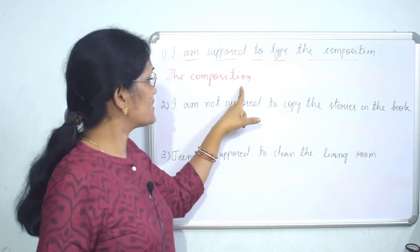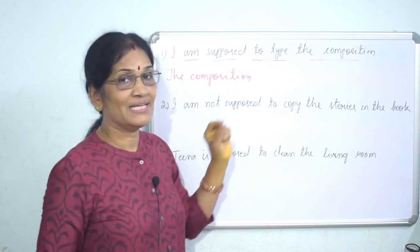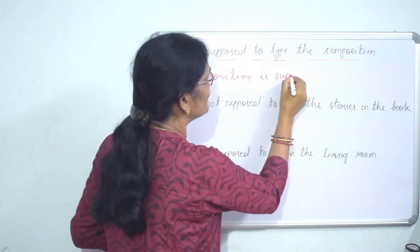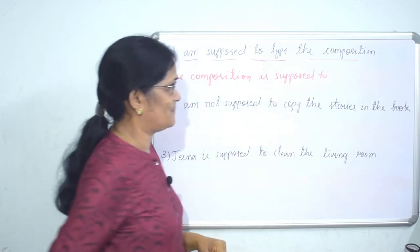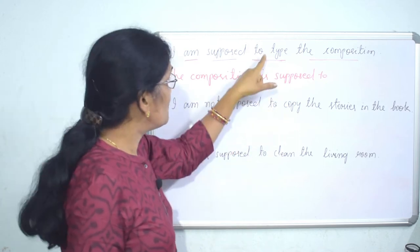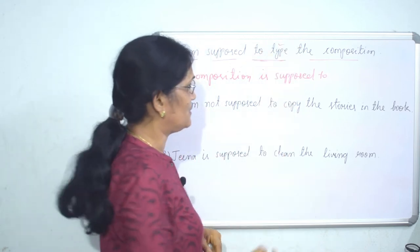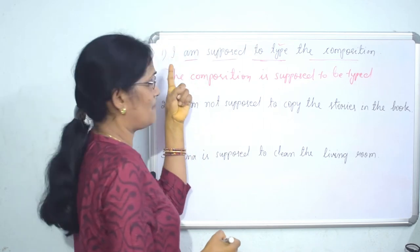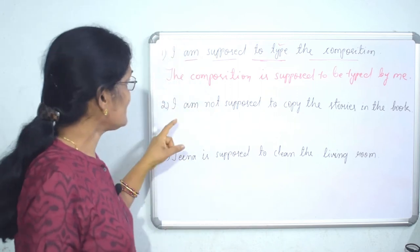The composition will take: 'The composition is supposed to be typed.' The passive structure will come — 'be' is added and the given verb will be in past participle form. So: 'be typed' — by whom? By me. So the full passive is: 'The composition is supposed to be typed by me.'